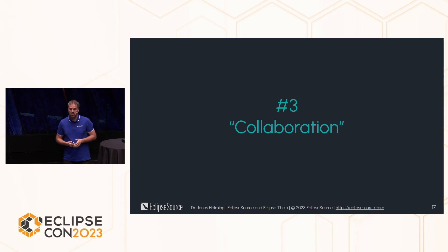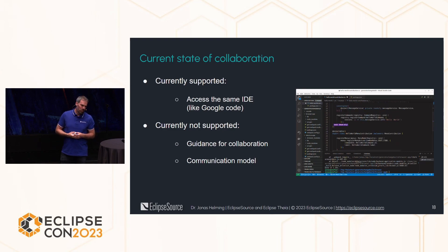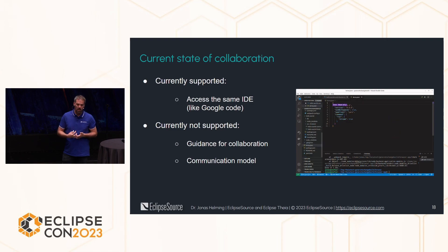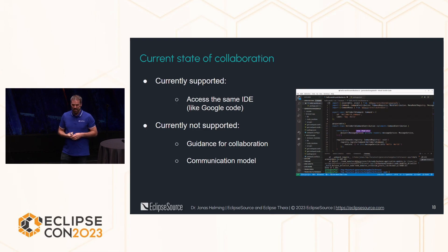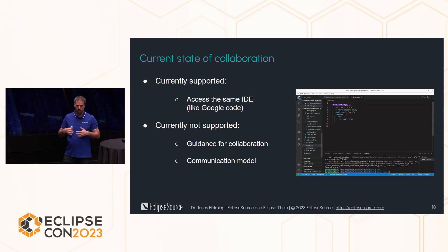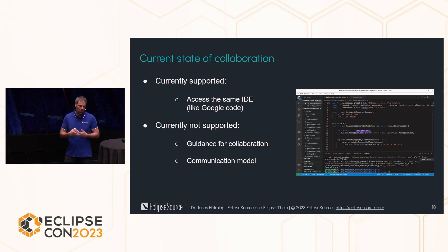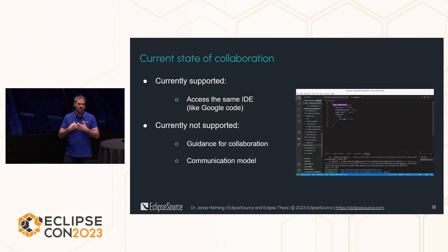I can only speculate about the exact reason. If we look at what's currently supported, there are already tools like Microsoft's Live Share where you can access the same IDE, see the other cursor, and change the same code — a little bit like Google Docs. But from my point of view, what's missing is some sort of collaboration model — some guidance for the collaboration and a communication model. I claim it's a different thing to code together compared to writing a text document together, because in code you have many different files, things have to compile — it's more complex.